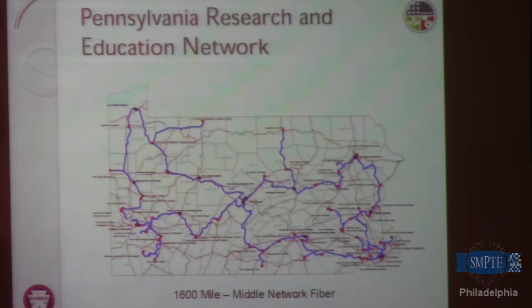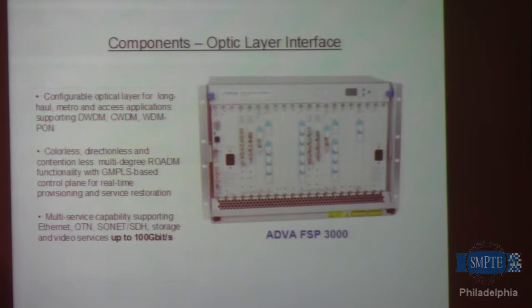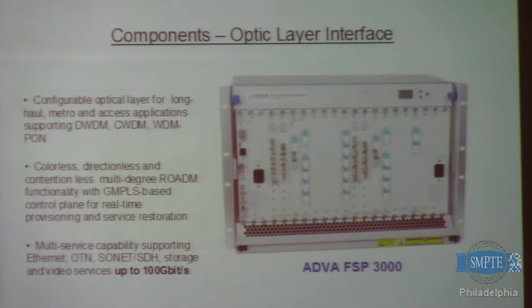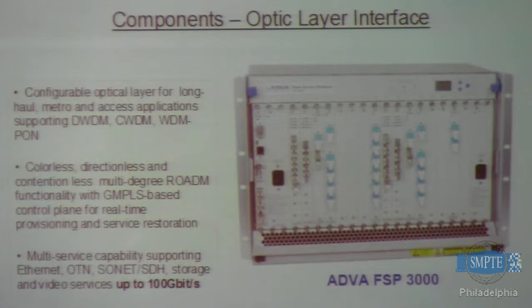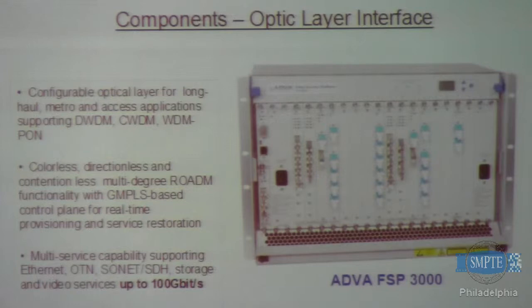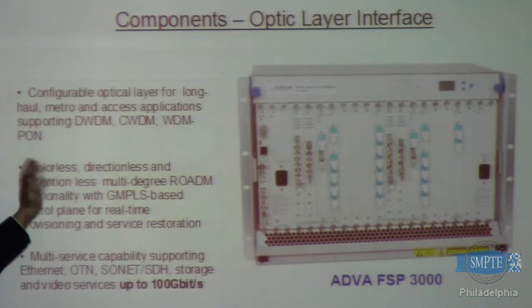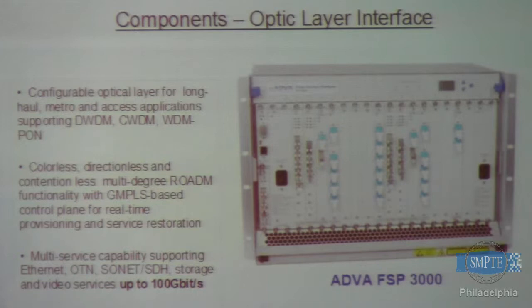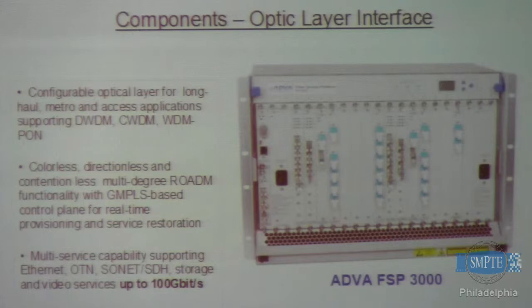This network is built with the highest quality, state-of-the-art mature equipment. This is the optical layer interface unit — the FSB 3000 — which is configurable with different wave modulation modules that interface with fiber. It gets you connected to the data on the fiber and the various technologies that run over light. The current unit being installed is capable of 100 gigabits per second per fiber channel.